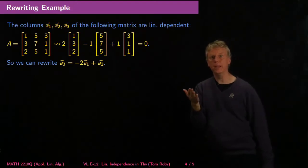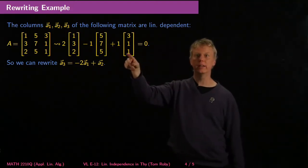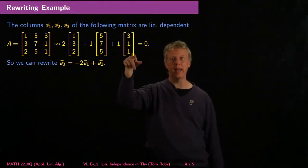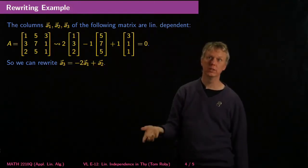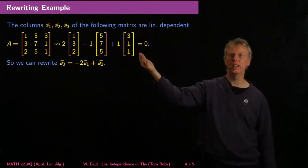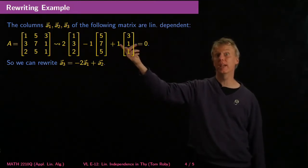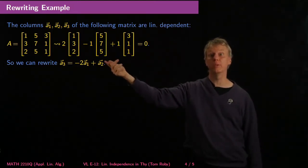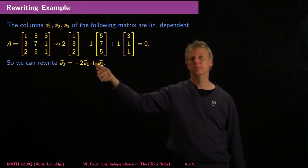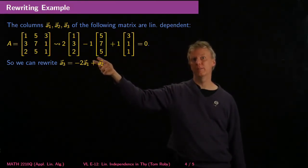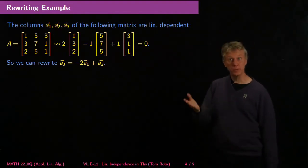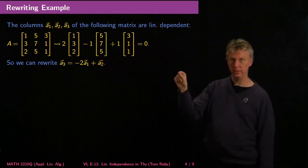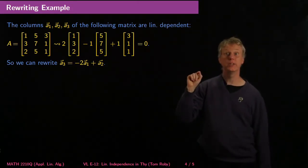So what does that mean? That means we can rewrite A3: if we move everything else to the other side, we can write A3 as negative 2 times A1 plus A2. If there had been some coefficient like 7 in front of A3, we would have divided by it and gotten negative 2/7·A1 plus 1/7·A2. So we can rewrite one vector as a linear combination of the others.